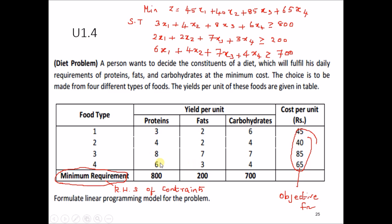But when you see this problem carefully, the term 'minimum requirement' is given here. Whenever minimum requirement or maximum requirement is given, it should come on the right-hand side of the constraint. If the problem states minimum requirement, then the problem is a minimization problem. If it states maximum availability or maximum requirement, then it is a maximization problem. Here, since minimum requirement is given, this is a minimization problem and the constraints are set accordingly.